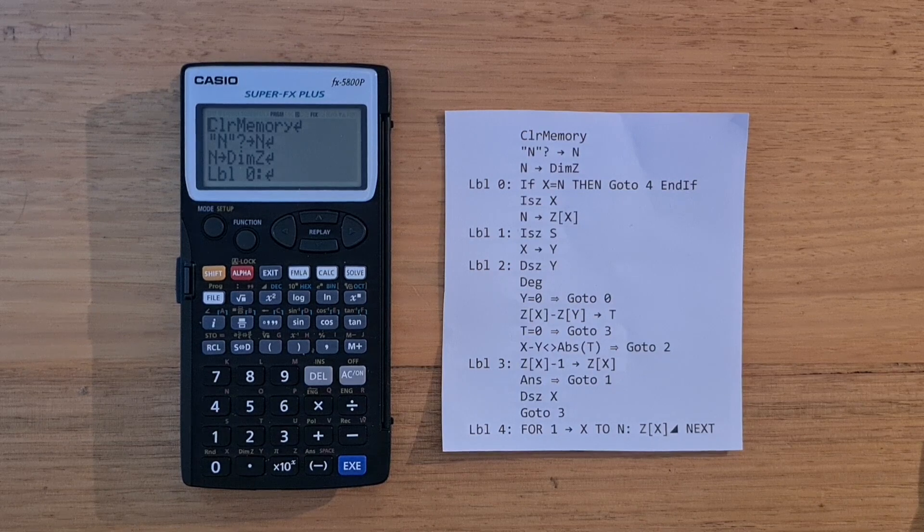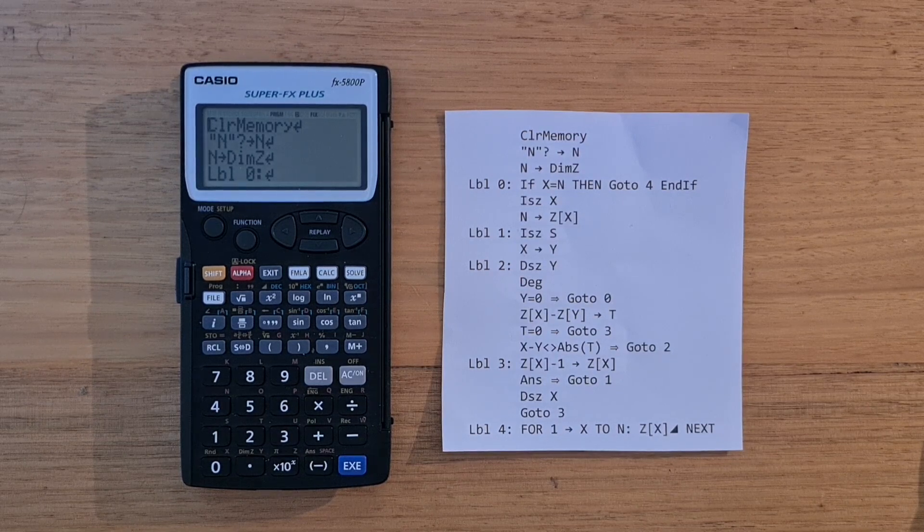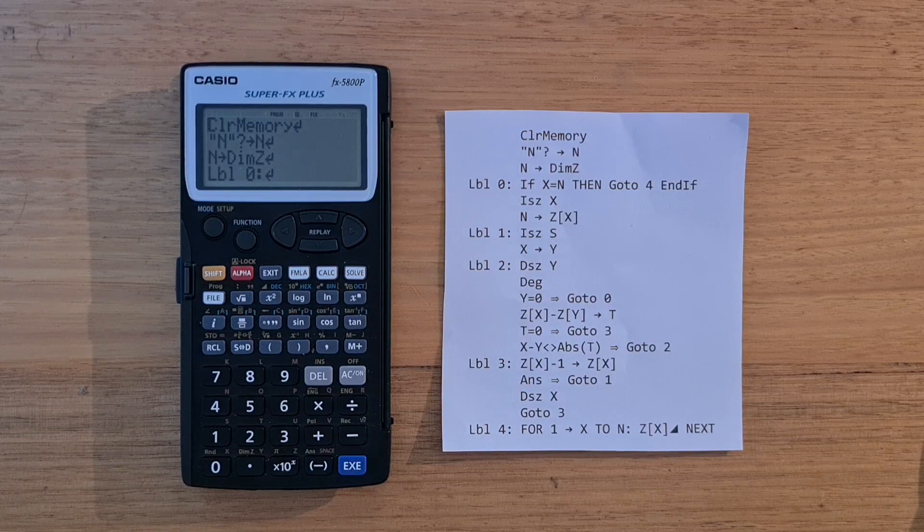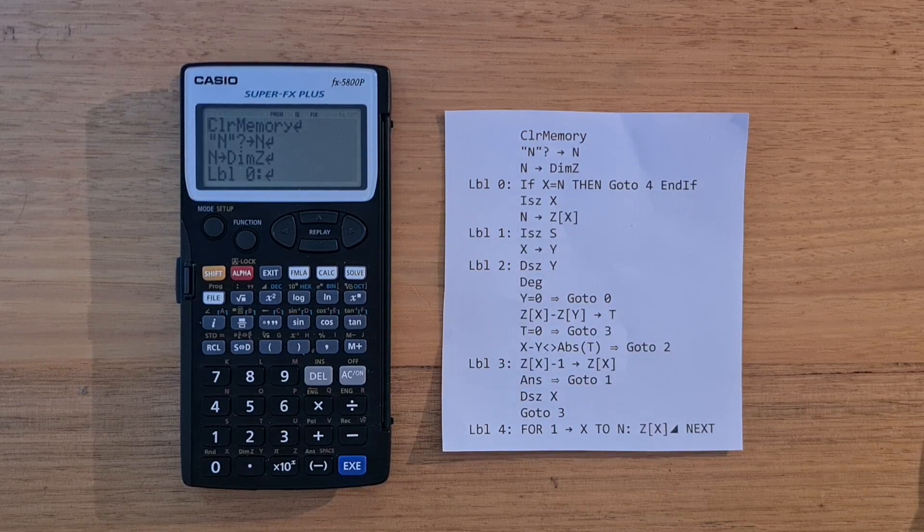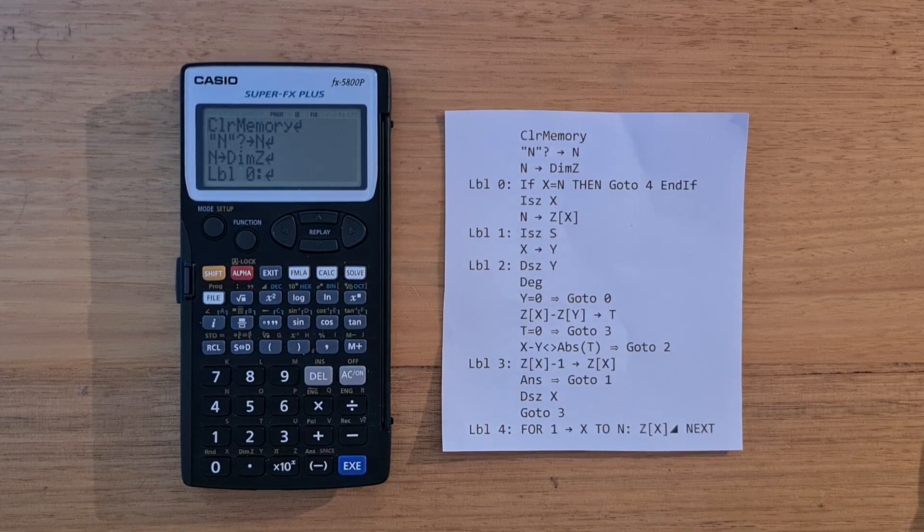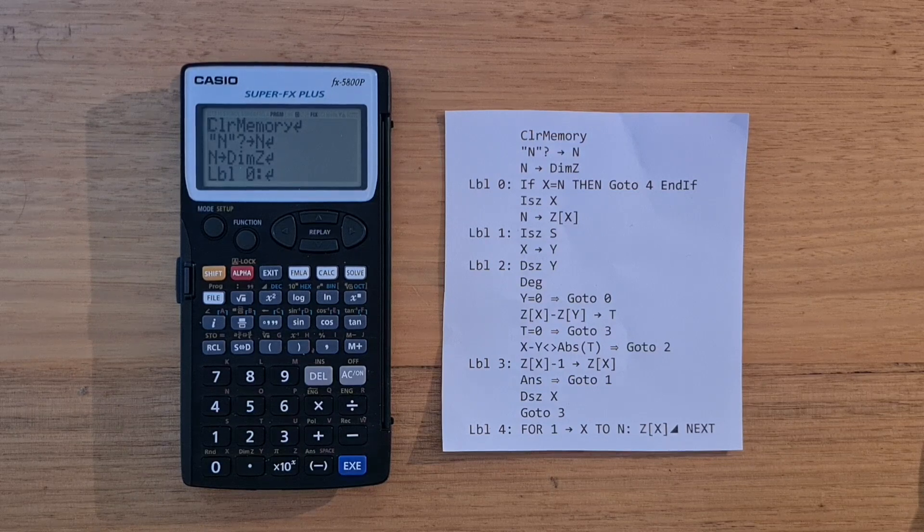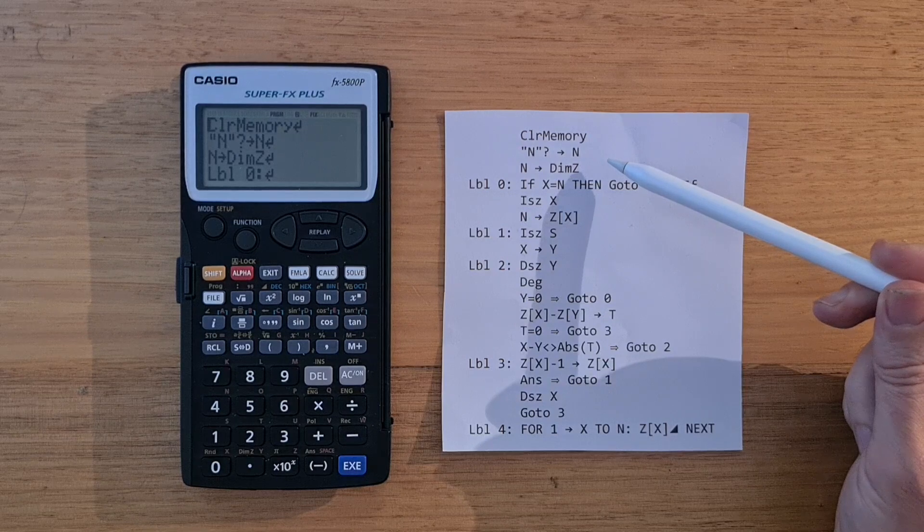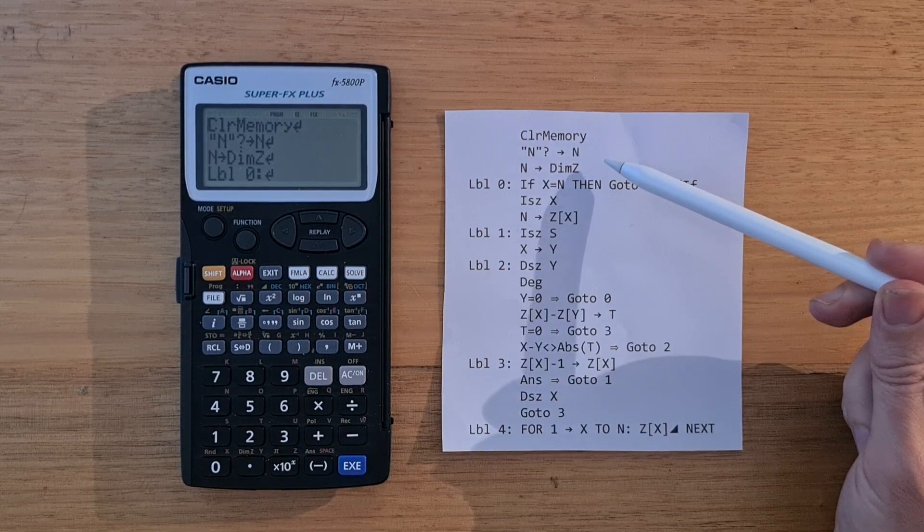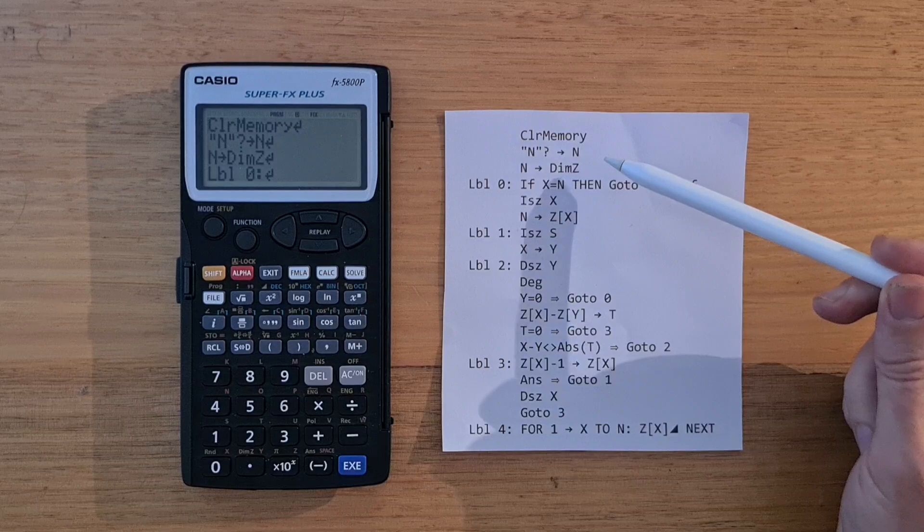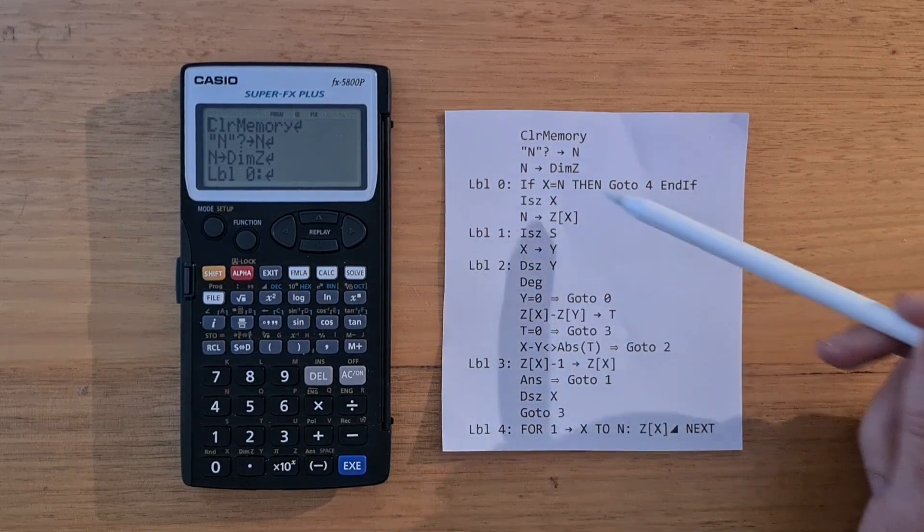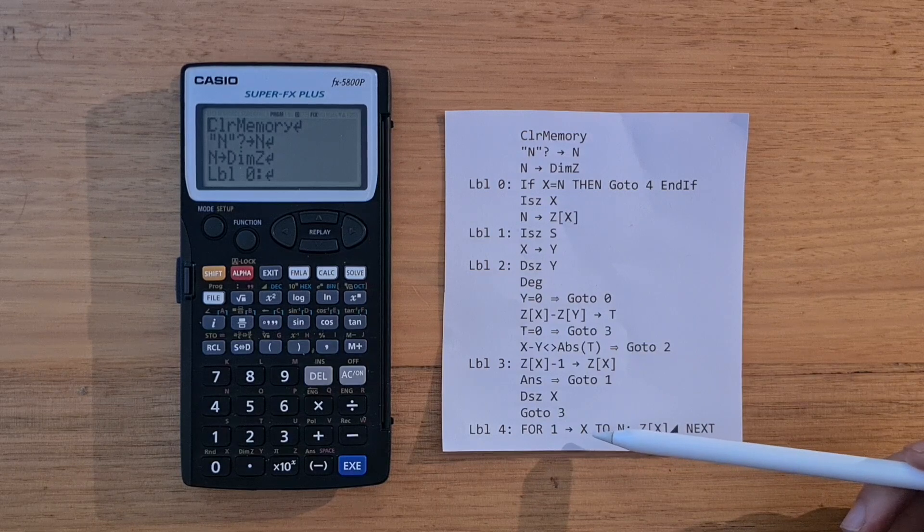And the 5800 supports programs written in a basic programming language similar to other modern Casio calculators. And here's an example of a solution to the N Queens chess puzzle. And you can see that the program starts out by prompting for N the size of the chessboard. And as you can see, the language supports numbered labels, if and for statements.